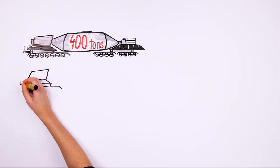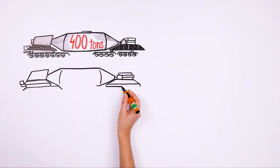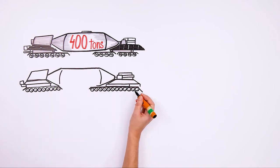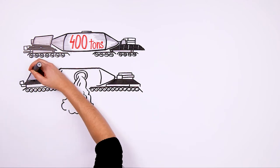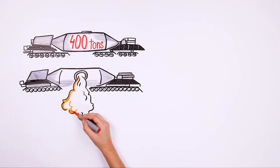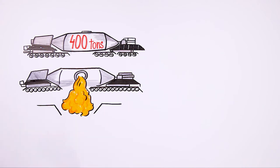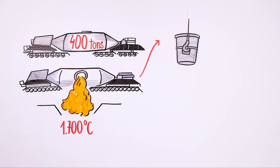In the steelworks, pig iron undergoes the process of desulphurization and purification with oxygen in a converter, a blast furnace that can reach the temperature of 1700 degrees C, where scrap metal is also placed.